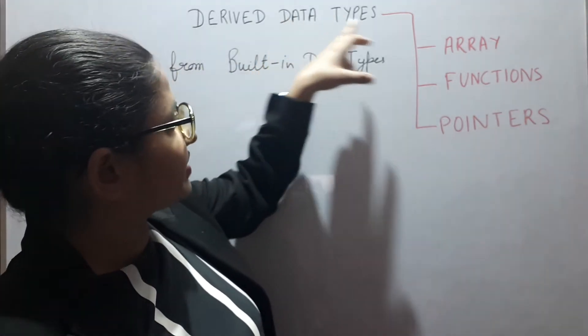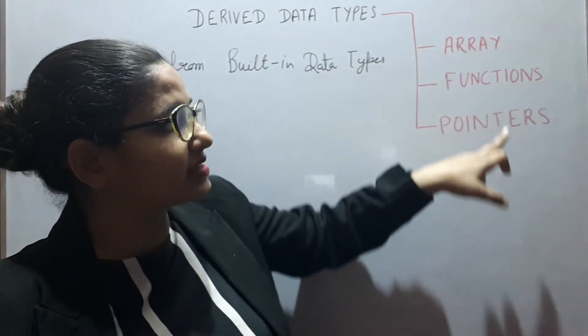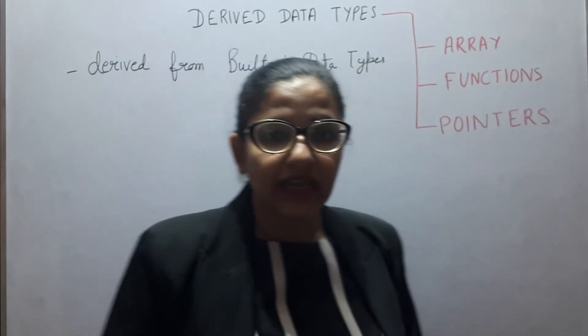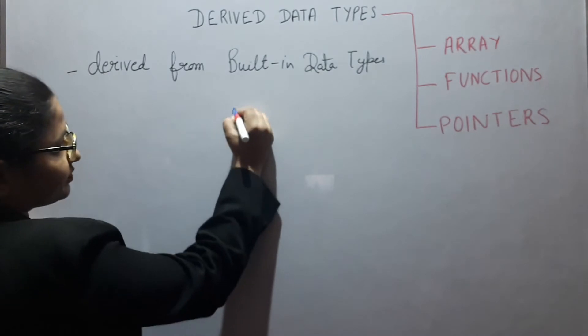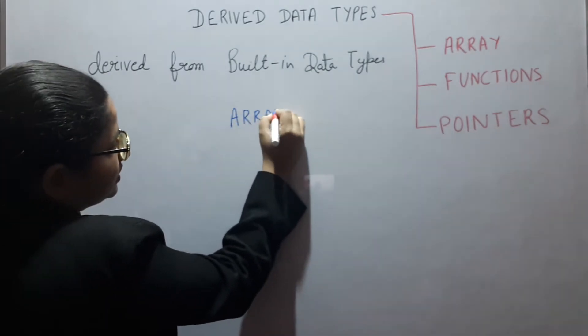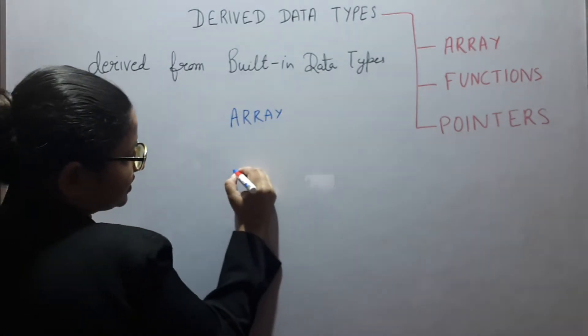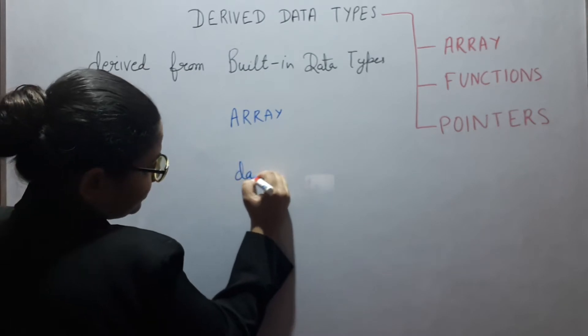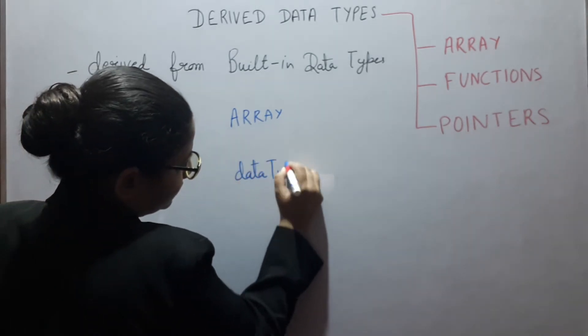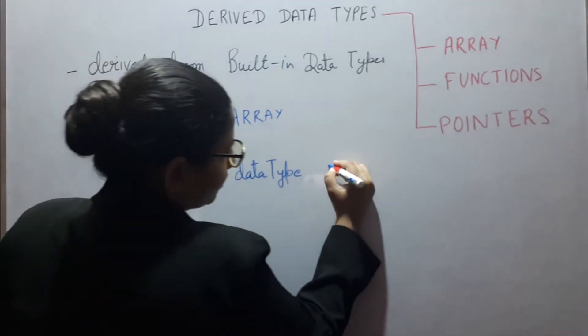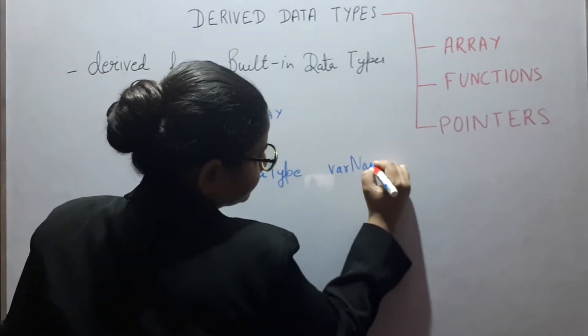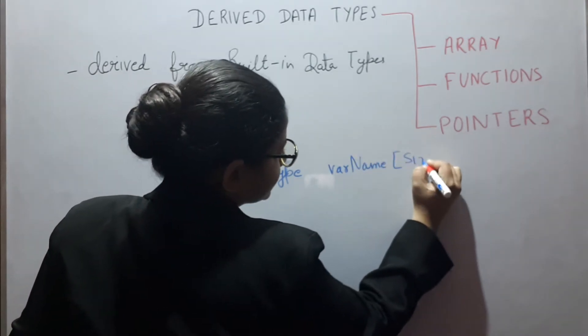Here we are having arrays, functions, and pointers. Let's see array. The syntax for array declaration is data type, variable name, and size.